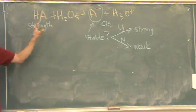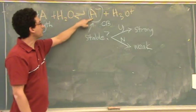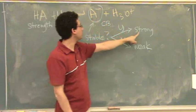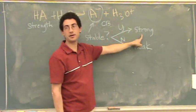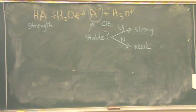We want this to go to the right a lot, making this really stable as a product. If this is really stable, the more stable this is, the stronger the acid. The weaker the conjugate base, the weaker the acid, or the less stable the conjugate base, the weaker the acid.